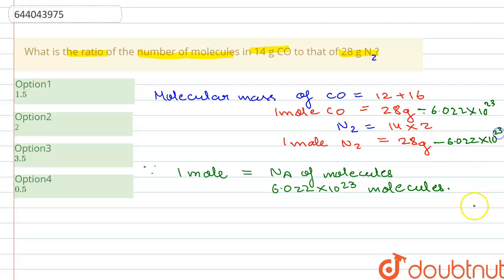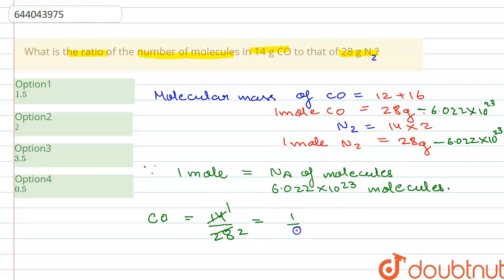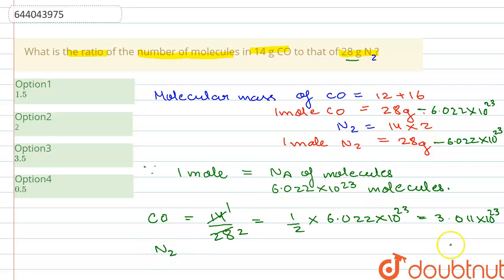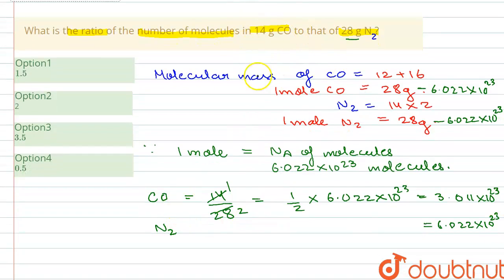Now they have asked us to calculate the number of molecules for just 14 grams of carbon monoxide. The given mass is 14 grams and the molecular mass is 28, meaning we are only using half of one mole. So the number of molecules in 14 grams of carbon monoxide will be 6.022 × 10²³ divided by 2, which equals 3.011 × 10²³ molecules. The mass of nitrogen given is 28 grams, equal to 1 mole, so the number of molecules in nitrogen is 6.022 × 10²³.